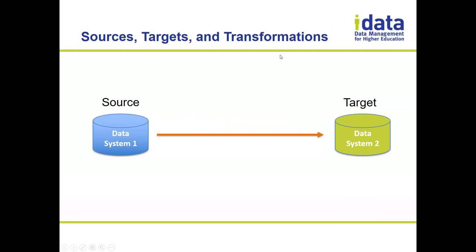I like to think about — and we like to talk about — lineage in terms of sources, targets, and transformations. The most straightforward way to think about this is you've got one data system as a source and another data system as a target. You can talk about lineage between data systems.